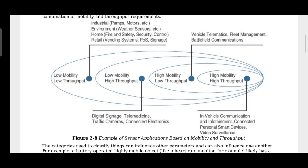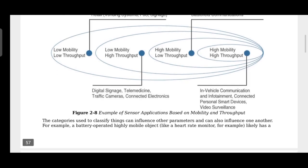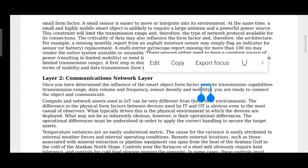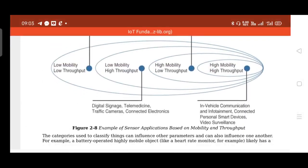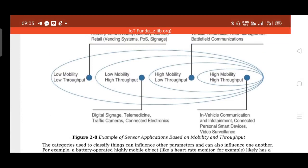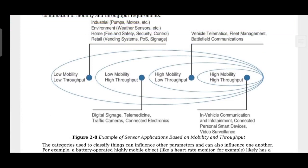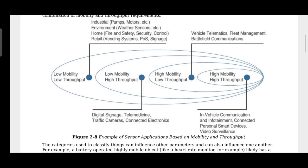In environmental applications, examples include weather sensor reporting. In home applications, examples include fire safety and security control. In retail applications, examples include vending systems. These are the four categories: high mobility high throughput, high mobility low throughput, low mobility high throughput, and low mobility low throughput.